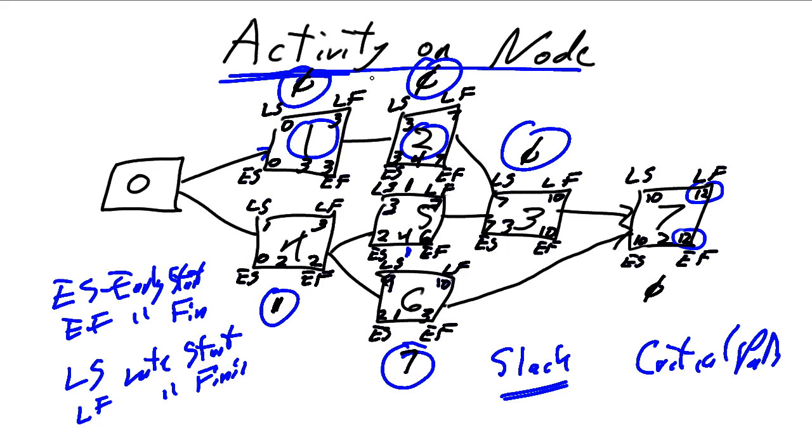Where any task that has a slack of zero is on the critical path. So our critical path for our project is those specific tasks, one, two, three, and seven. Any change in those is going to directly impact the project's end date.